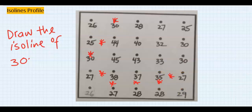There is nothing here for us to take 30 from, hence the line will just go off the edge.